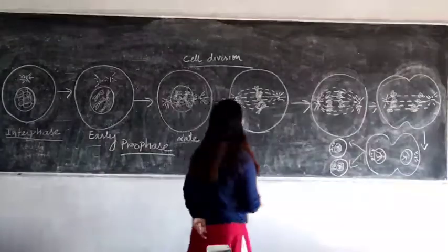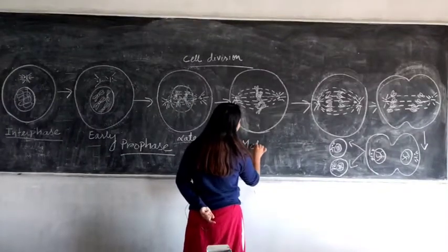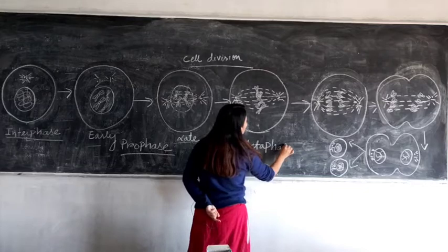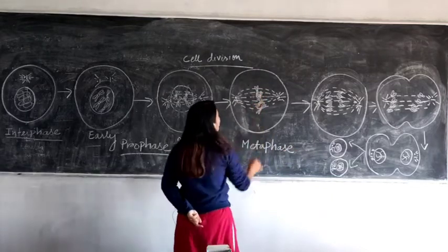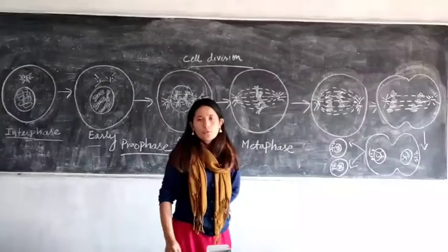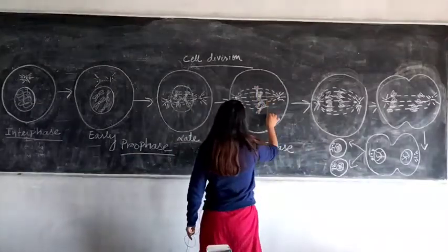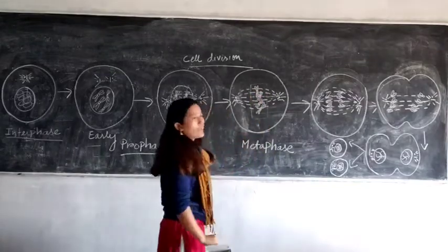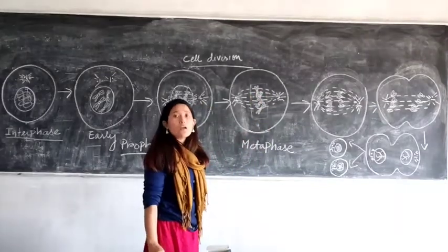After prophase comes metaphase. In metaphase, the chromosomes line up in the equatorial plane. As soon as you see that the chromosomes have lined up in this plane, you can identify that particular stage as metaphase.